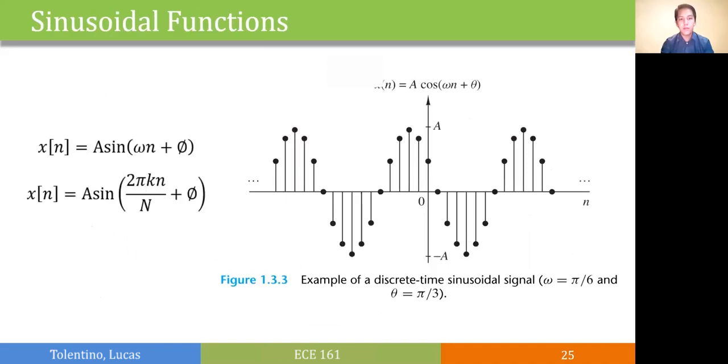Last but not least, our sinusoidal functions denoted by a sine or a cosine omega n plus phi, where a is the amplitude, omega is the angular frequency, and phi is the phase shift. As shown in the figure, we have a cosine signal with angular frequency pi over 6 and a phase shift of pi over 3.